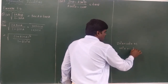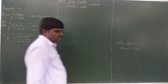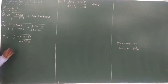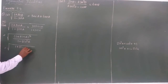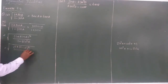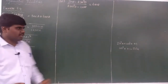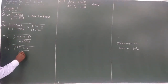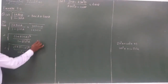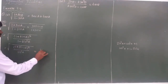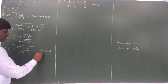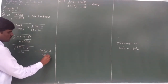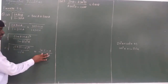cos²A is equal to 1 - sin²A. Using that formula, we substitute: the expression becomes the square root of (1 + sinA)² divided by cos²A. Taking the square root, the numerator becomes (1 + sinA) and the denominator becomes cosA.